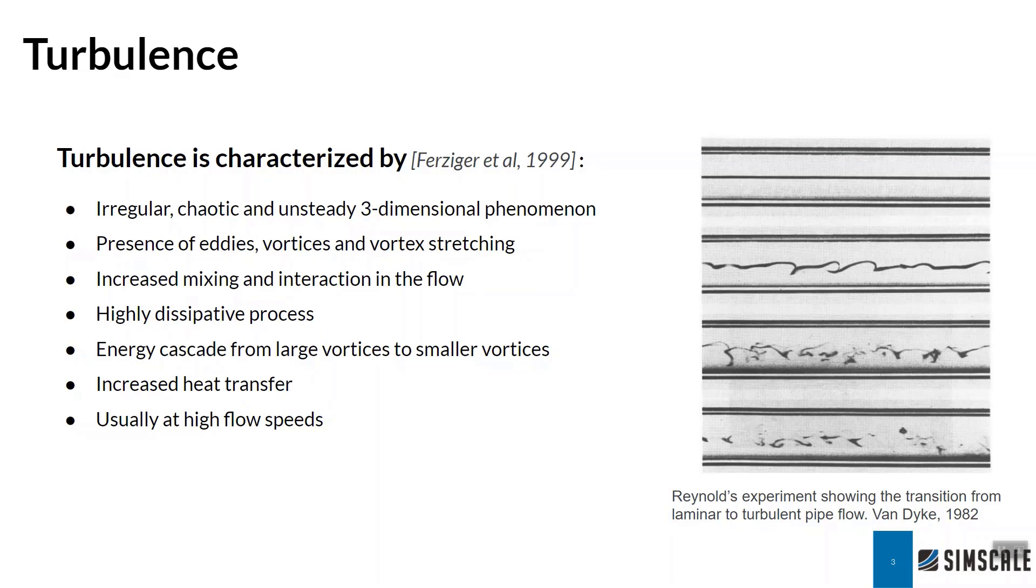Typically, what we observe in a turbulent flow is that we have these larger eddies, and there is an energy cascade, meaning most of the energy of the turbulence is contained within these larger swirls, but they break down into smaller and smaller eddies, and we lose that energy as we go along. This process typically occurs at higher flow speeds.